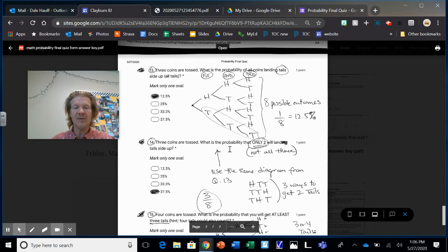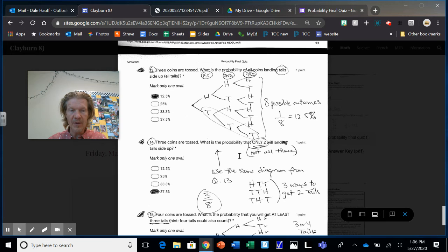Now, this one says three coins. What's the probability of only two tails? Not three, only two. So heads heads heads. No, that's not it. Heads heads tails. No, that's not it. Heads tails heads. No, that's not it. Heads tails tails. Oh, that's one. Heads tails tails is one. Then tails heads heads. Nope. Tails heads tails. Oh, that's two. Two tails. And then tails tails heads. That's three. Tails tails tails. That doesn't work because there's three of them. I don't want two of them. So three chances out of eight or 37.5%.